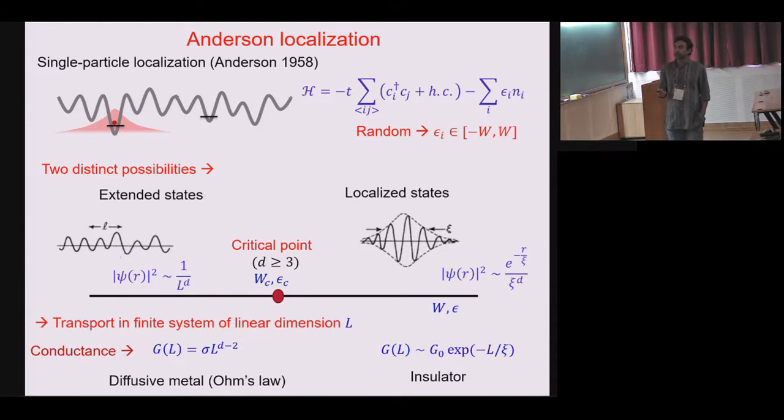Now the kind of thing that I'll be discussing is mostly transport. We'll be looking into conductance. This fact that wave function could be extended or localized has consequence for conductance. It could be either diffusive which is L to the power D minus 2, D being the dimension or insulator, insulating exponentially localized behavior.